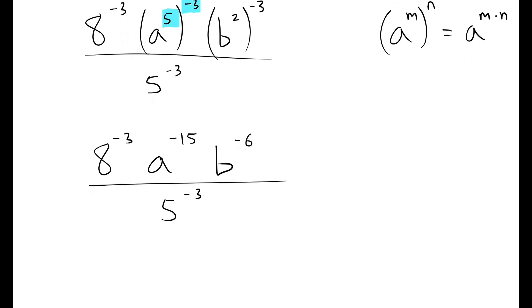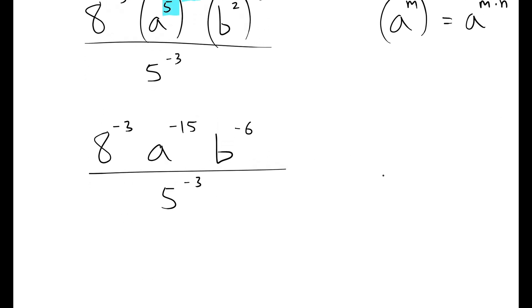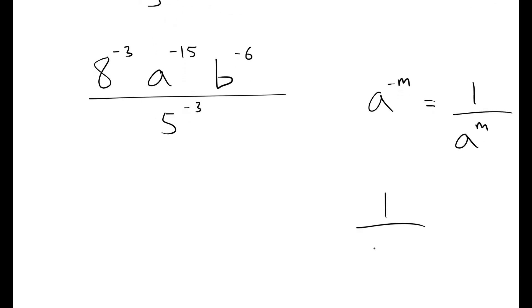One more thing that needs to be done is when we have a negative power, such as A to the negative M, that A should be moved down below and we can change the sign of his power. Similarly, if we have 1 over A to a negative power, we'll move him to the top and change the sign. So the 8 goes below, the A goes below, B goes below too, and the 5 comes up above. Everybody switches positions and we switch the sign of the exponent.